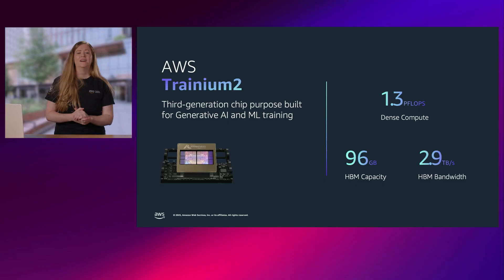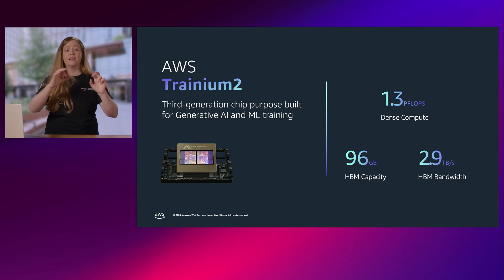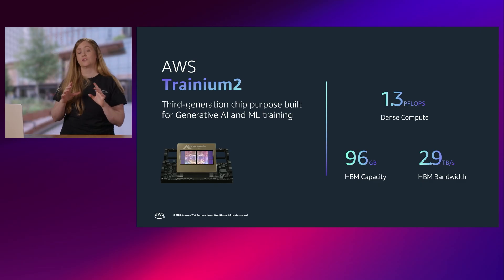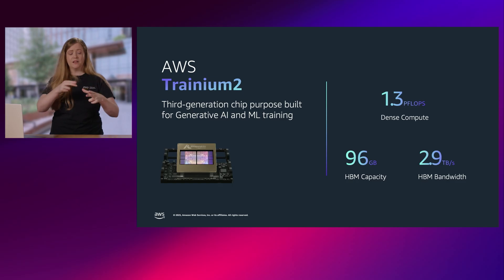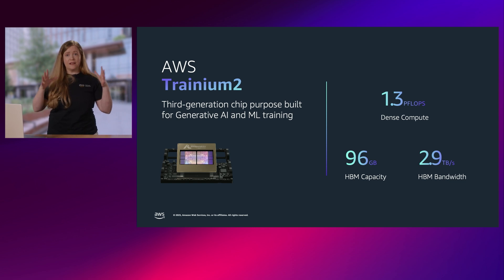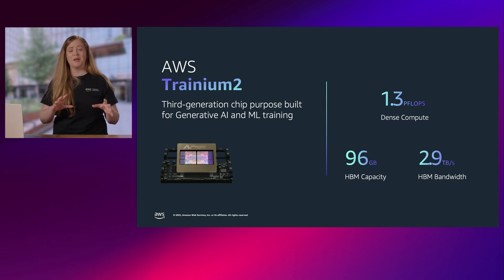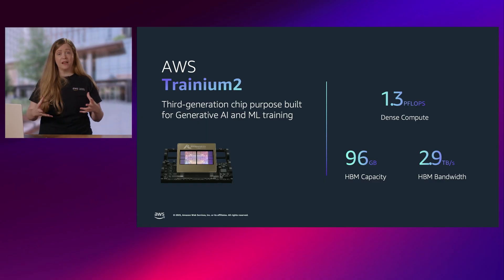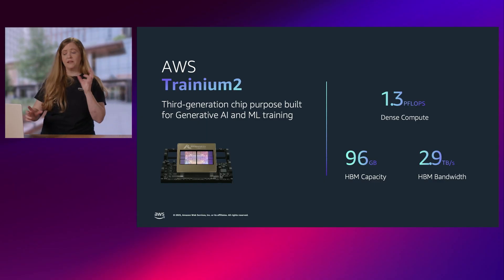Let's take a look at some of the specs. Trainium 2, the chip itself, has two dies, four HBM banks, and eight neuron cores per chip. The sum of all those HBM banks gives you nearly 100 gigabytes of HBM capacity. You can move data at a clock of nearly three terabytes per second on those HBM banks, and you get 1.3 petaflops of dense compute on one single chip.